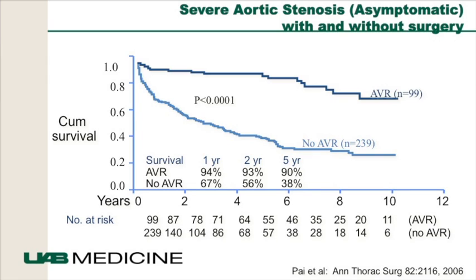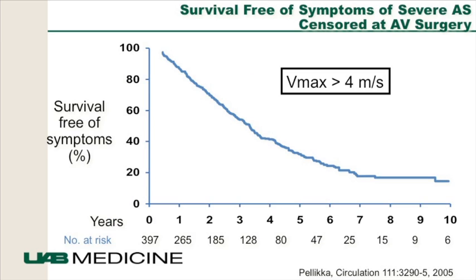A study by Pye et al. looked at asymptomatic patients with severe aortic stenosis and showed that without surgical aortic valve replacement, outcomes were poor: survival with AVR versus no AVR was 94% versus 67%, and at 5 years was 90% versus 38%. So being asymptomatic still confers major risk. A study by Patricia Pellikka at the Mayo Clinic showed that survival free of symptoms declined over years — about half were dead at 4 to 5 years with severe AS defined as a Vmax of more than 4 meters per second.